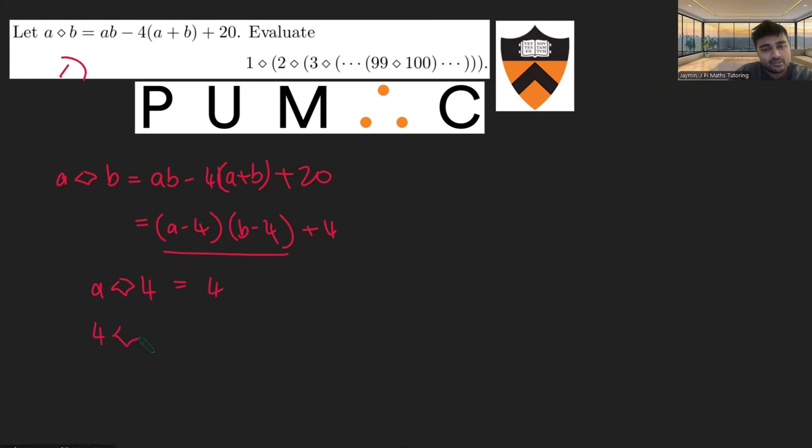Equally, if I have 4 diamond B, I get 4. So if 4 appears anywhere in my diamond operation, either on the left or on the right, the outcome will be 4.